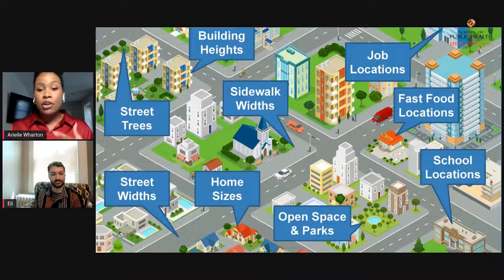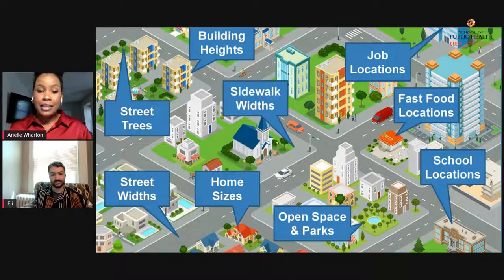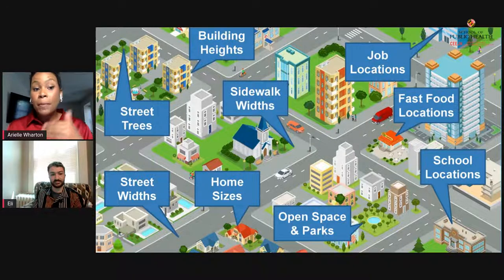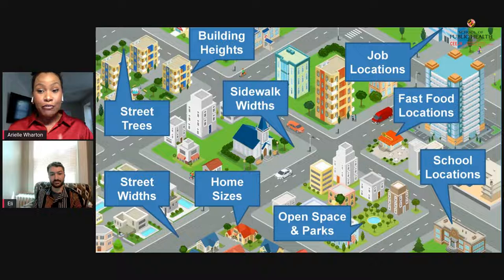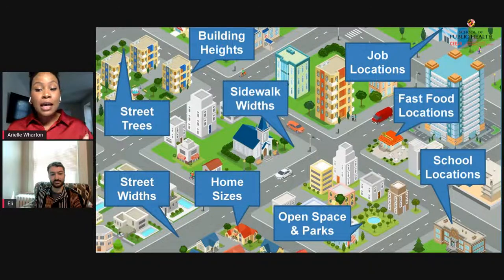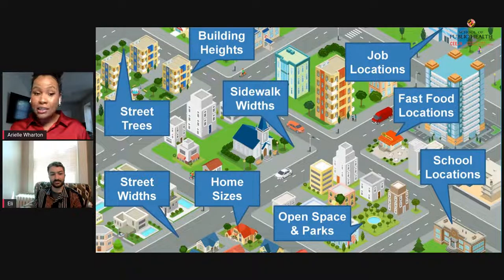Here we have a graphic demonstrating different features of a neighborhood based on planning and zoning. As you can see, there are street trees, building heights, job locations, fast food locations, and open space and parks. We know that these community features have different effects on different populations, essentially causing different health outcomes. Communities can be very diverse in terms of these features, which are controlled and regulated by policy and community advocacy.